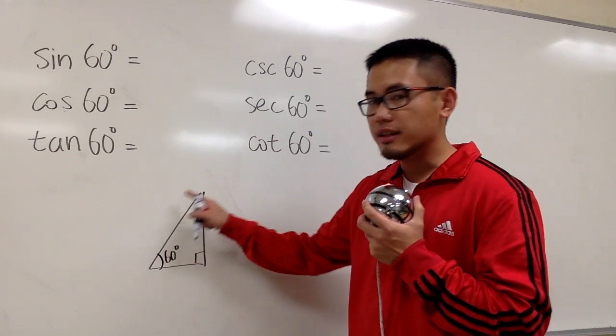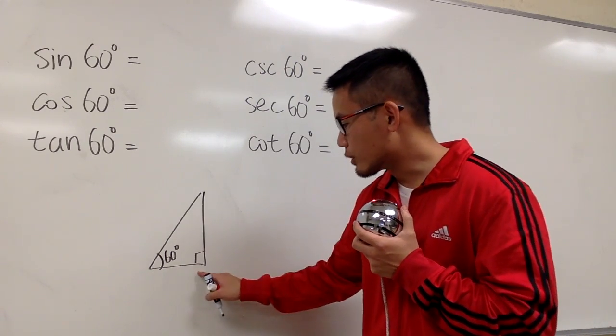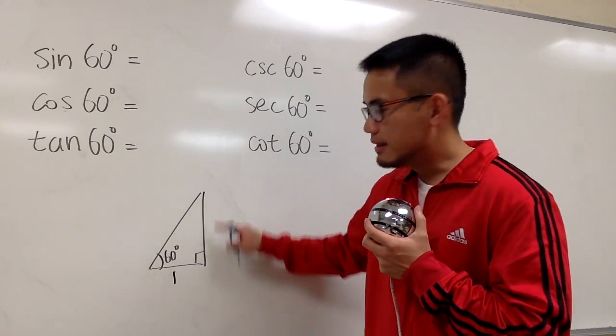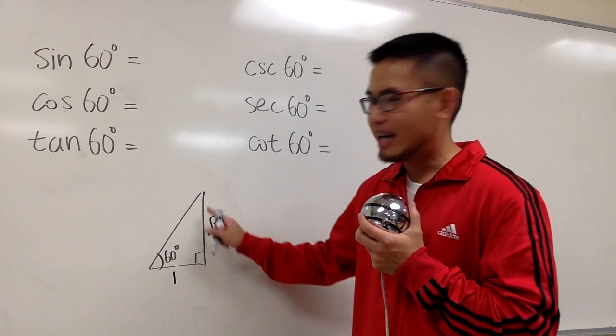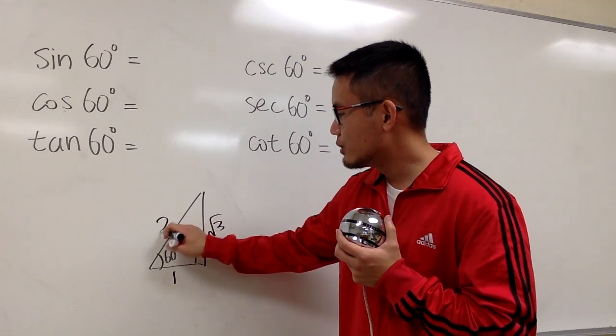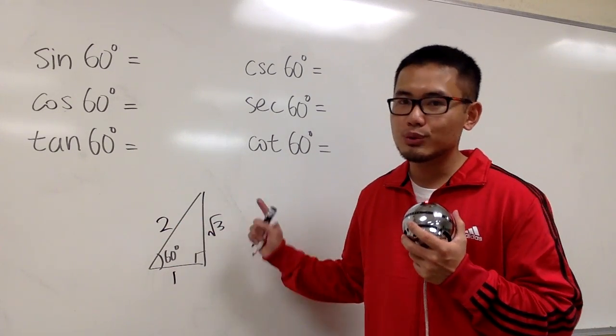And the ratio of the sides in the 30-60-90 special right triangle is the following. This is the shorter leg, it will be 1. And this is the longer leg, it will be square root of 3. And the hypotenuse right here is 2, okay? So be sure, we remember these values really, really well.